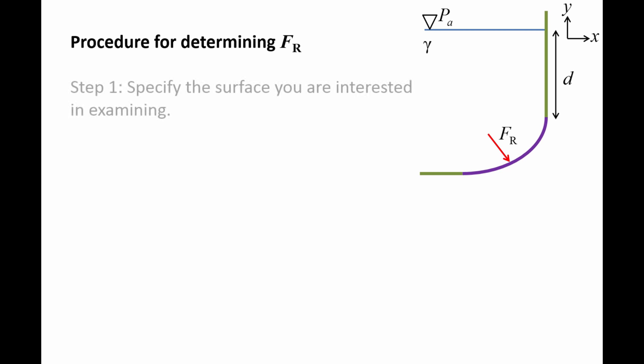However, it is still possible to find the resultant force on a curved surface using the following procedure. First, we need to specify the surface we want to examine. The drawing on the right shows a cross section of a tank that contains a liquid of specific weight gamma. The right side of the tank is flat and vertical to a depth d, then becomes curved. The curved surface is highlighted in purple and has a height hs and length ls, and a width ws out of the screen.